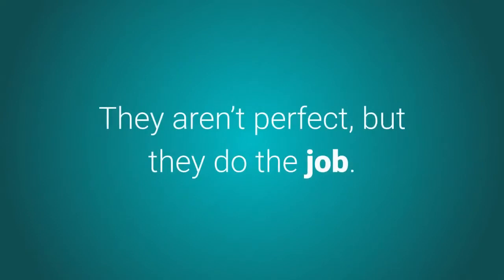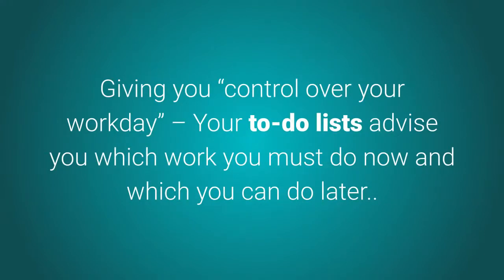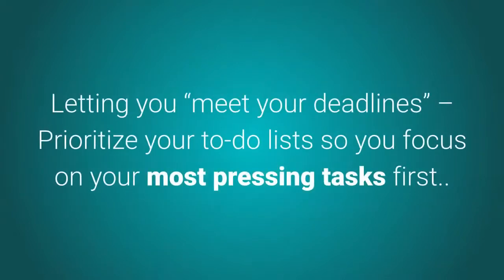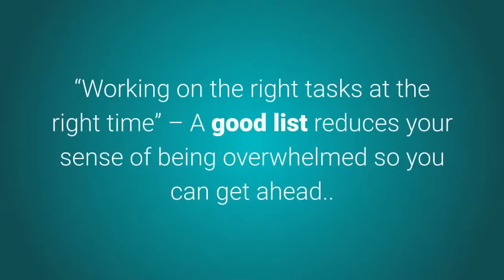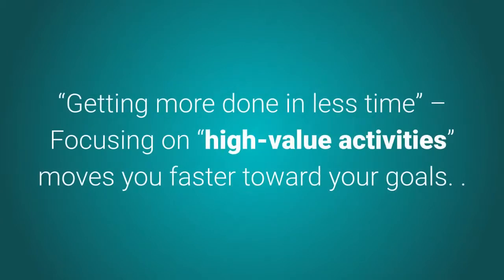Worthwhile systems do exist. They aren't perfect, but they do the job. A quality to-do list system can deliver eight benefits. First, giving you control over your workday — your to-do lists advise you which work you must do now and which you can do later, letting you meet your deadlines. Second, prioritizing your to-do lists so you focus on your most pressing tasks first, working on the right tasks at the right time. A good list reduces your sense of being overwhelmed so you can get ahead.